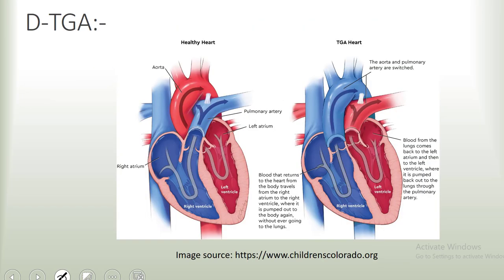Now as you can see in this demonstration, in a normal heart, the aorta is connected to the left ventricle and the pulmonary trunk is connected to the right ventricle. In a child with TGA, the aorta is actually connected to the right ventricle instead of the left, and the pulmonary trunk is connected to the left ventricle instead of the right.